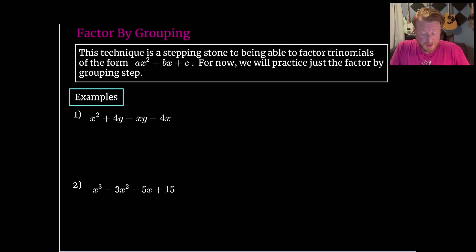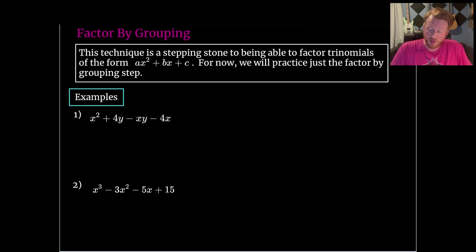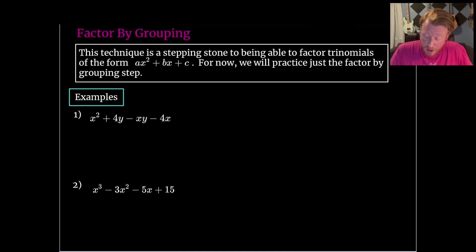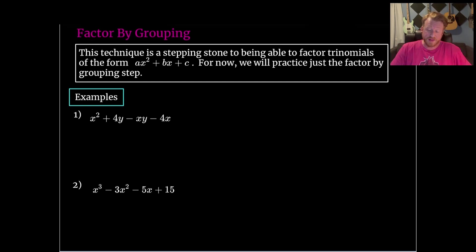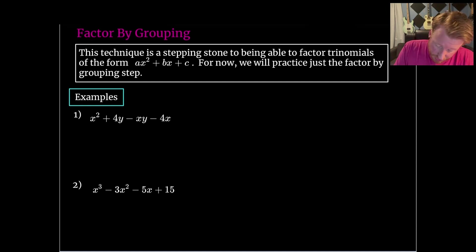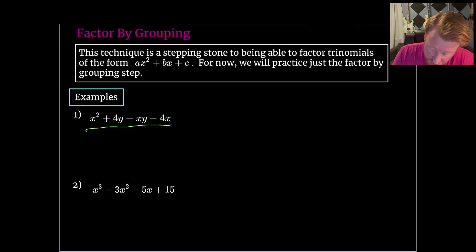So next we will practice some factor by grouping. This technique is mostly a stepping stone to being able to factor trinomials of the form ax² + bx + c — quadratic form — which is something we're going to need constantly in this class and in every math class going forward. We're just going to practice this factor by grouping step first, and then apply it on the next slide when we actually start factoring quadratics. This polynomial has four terms, and we can see there's nothing quite in common for all of them.